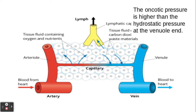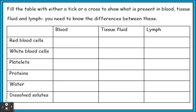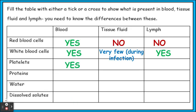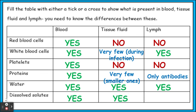That's essentially how tissue fluid is formed and how it returns to the blood. You need to be aware of what is present within each part and the differences in composition between blood, tissue fluid, and lymph. Pause the video and have a go at filling out the comparison table — here are the answers.